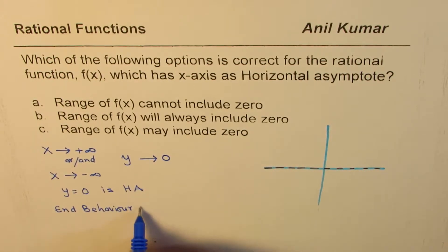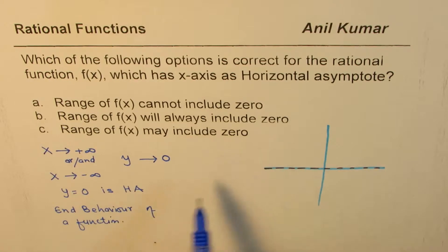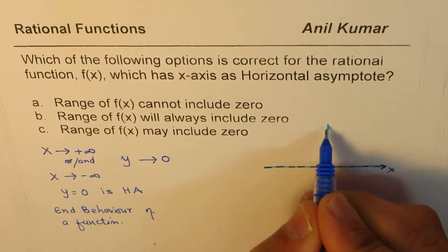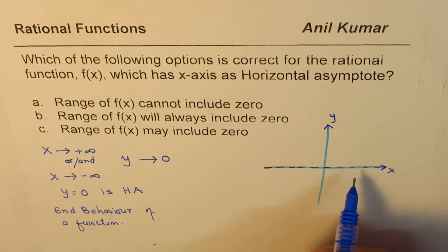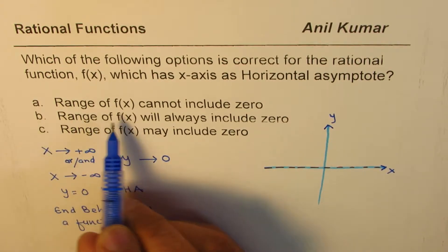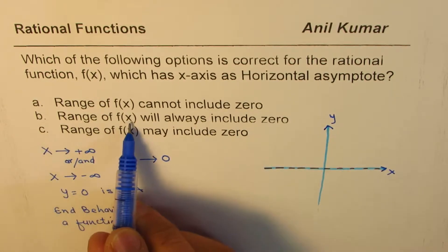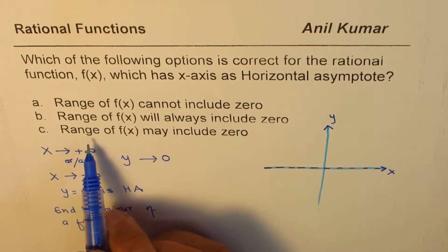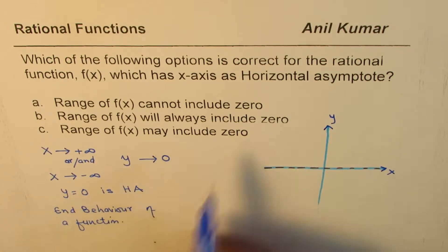Now the question is: given that the x-axis is the horizontal asymptote for the function, is it the case that the range of the function cannot include zero, or that the range will always include zero, or that the range may include zero?